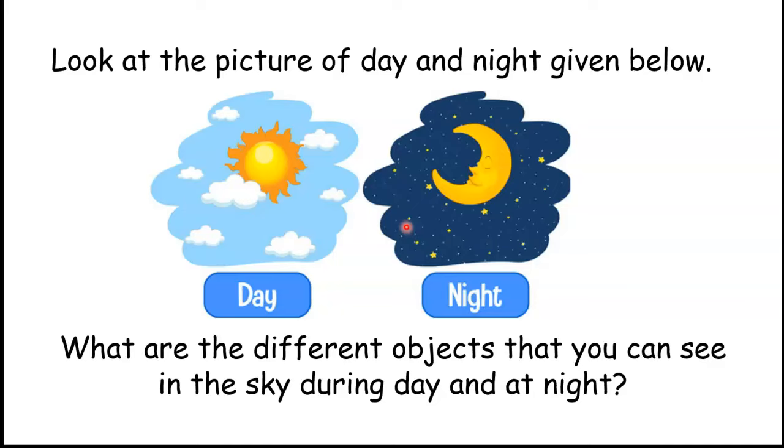Kids, let's see how much you have learned today. Look at the picture of day and night given below and find the different objects that you can see in the sky during day and at night.